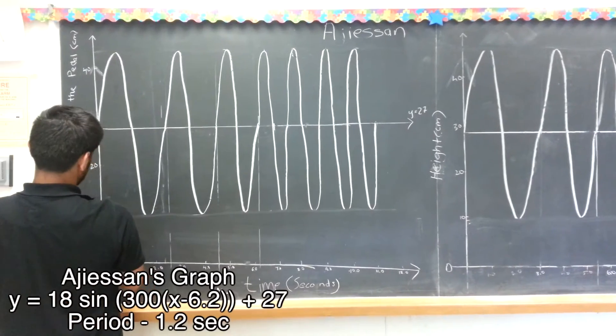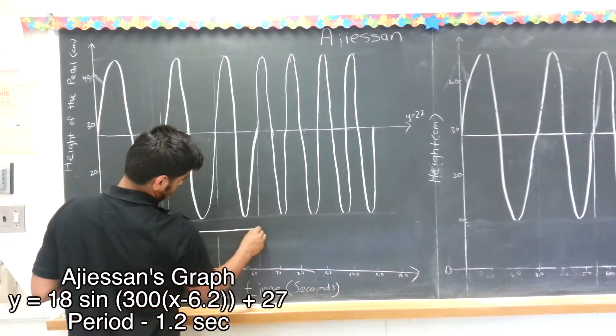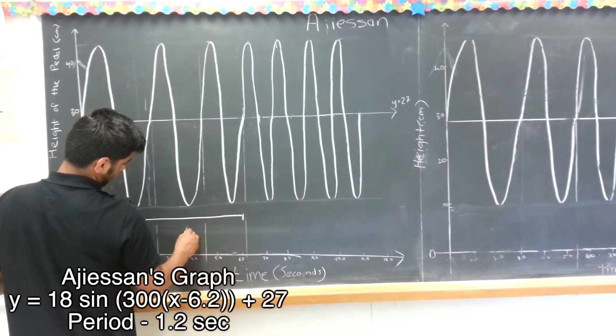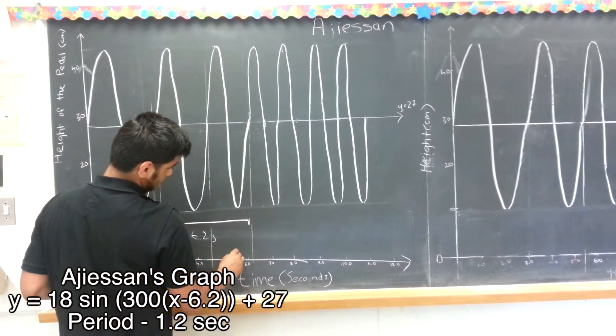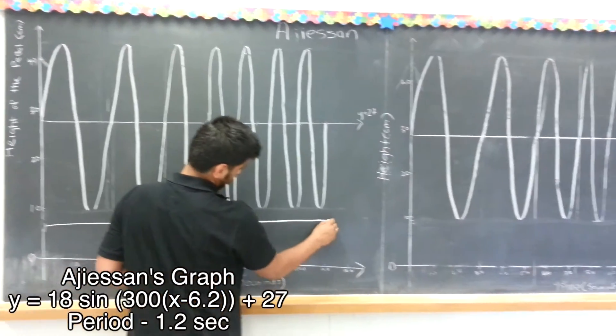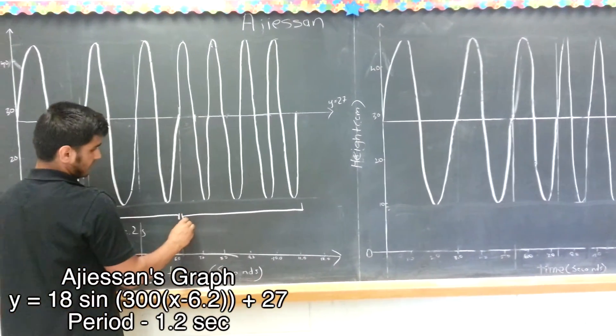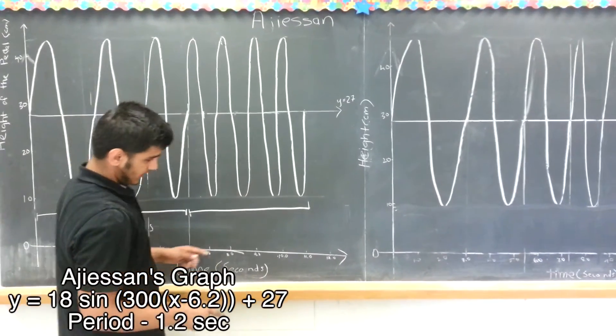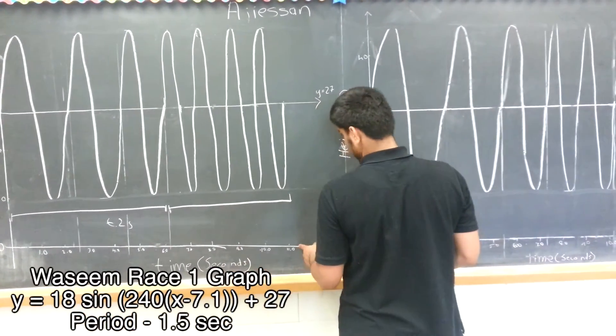So here's the height of his graph. This is how long it took him to accelerate and come to a constant speed, 6.2 seconds. And from here, his graph became periodic from here to here. And he finished the race in like 11.2 seconds.